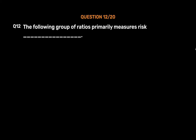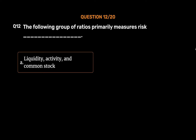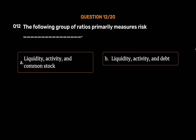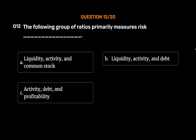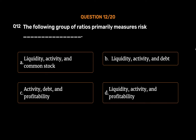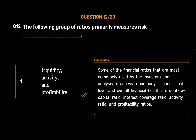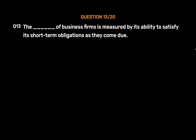Question number 12. The following group of ratios primarily measures risk: Option A: Liquidity, activity, and common stock. Option B: Liquidity, activity, and debt. Option C: Activity, debt, and profitability. Option D: Liquidity, activity, and profitability. The correct answer is Option D: Liquidity, activity, and profitability. Financial ratios commonly used to assess a company's financial risk level and overall financial health include the debt-to-capital ratio, interest coverage ratio, activity ratio, and profitability ratios.